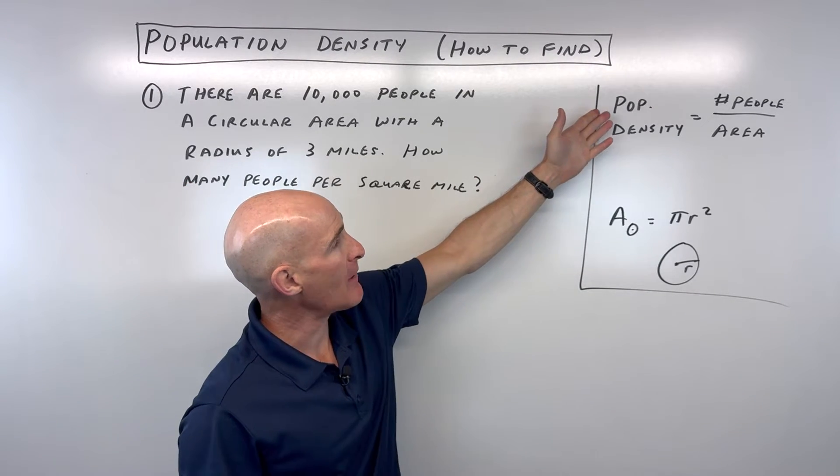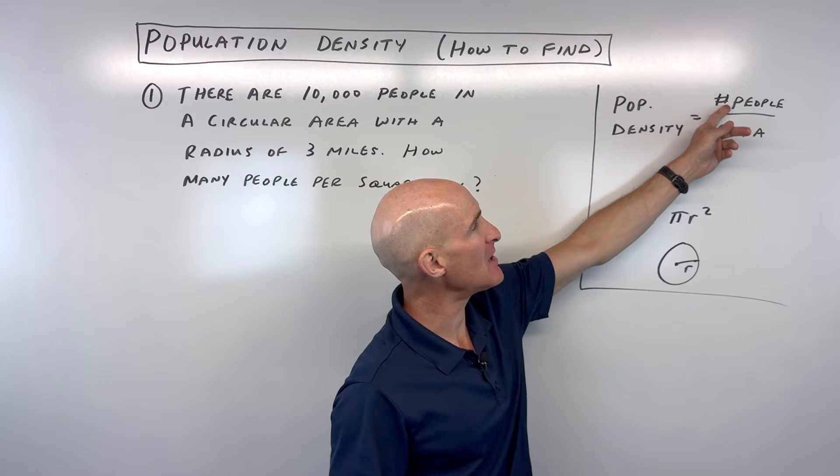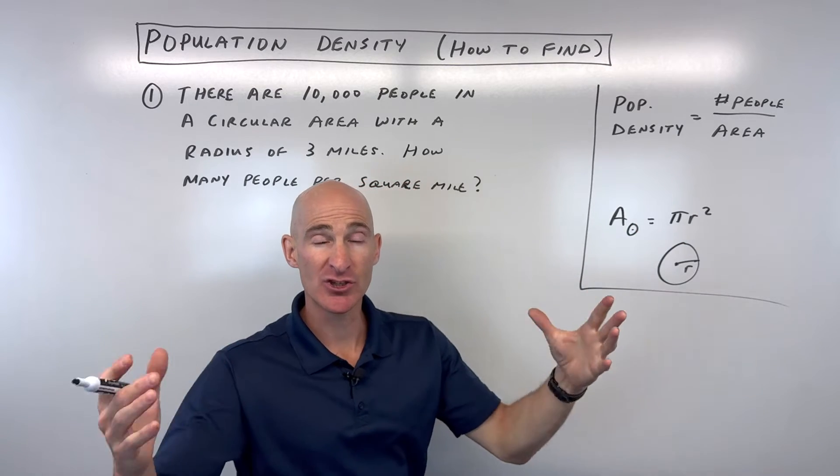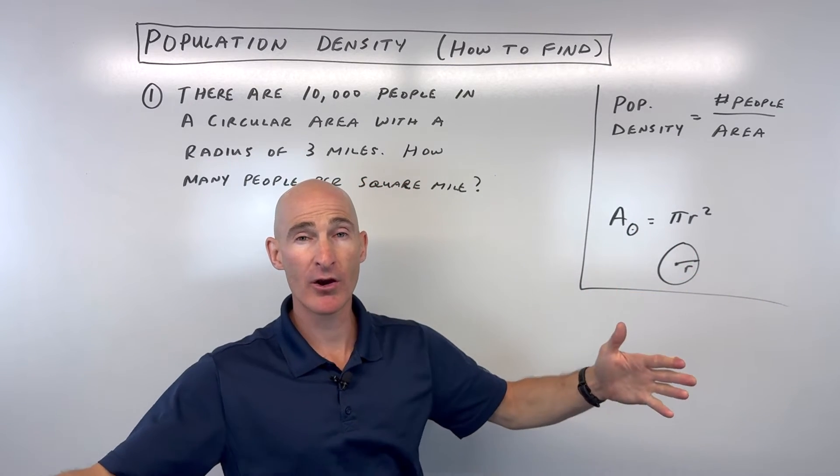But technically speaking, population density is the number of people divided by the area. Now we might be talking about a circular area or a square area or some type of region.